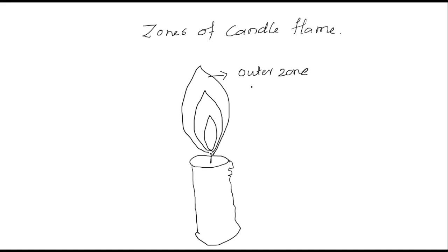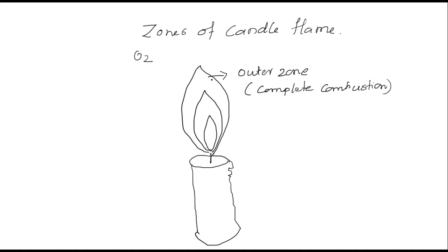In the outer zone, complete combustion is possible because it is more exposed to oxygen. More oxygen means a better combustion process, and therefore this part is the hottest zone. The next zone is the middle zone, where only partial combustion is possible.